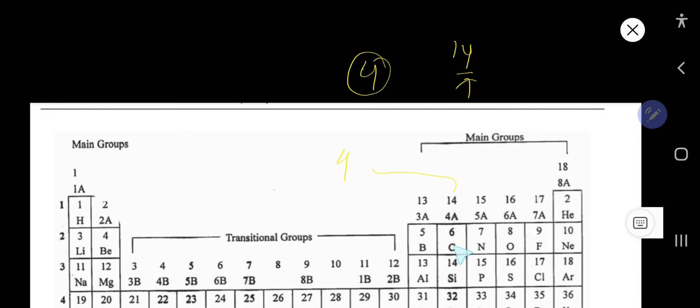The second method is to write the electron configuration of carbon. Carbon has atomic number 6. The electron configuration follows: 1s, 2s, 2p, then 3s, 3p, 3d. The s subshell can hold maximum 2 electrons, p can hold maximum 6 electrons, and d can hold 10.